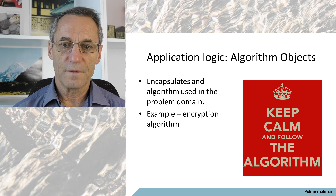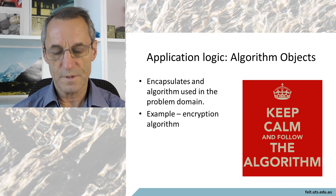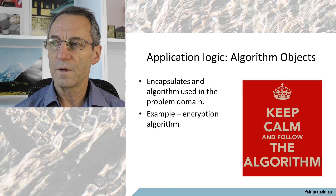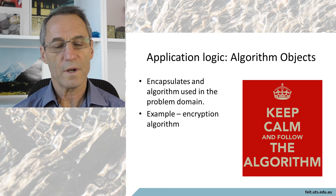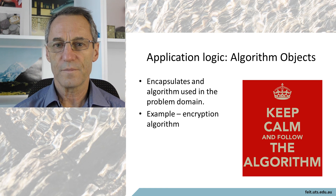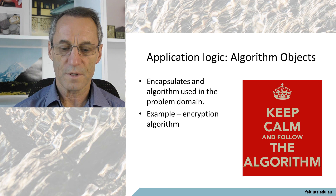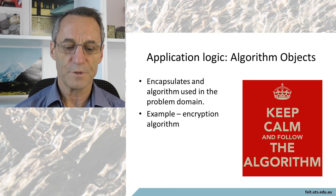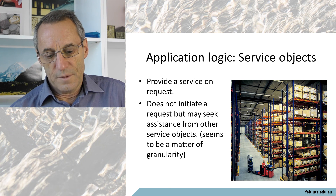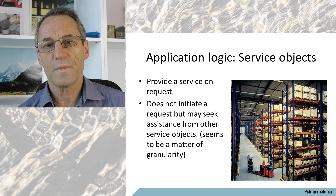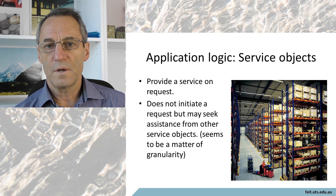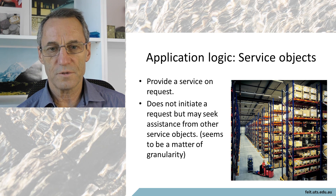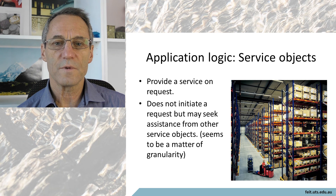Application logic can handle algorithmic things - for example, an encryption algorithm, or biometric analysis such as fingerprint analysis, where the logic for analyzing the fingerprint and returning results would be placed in an application logic object. Similarly, in a microservice architecture, an object exists to do something - a large calculation or a piece of IO - and that's a piece of application logic.